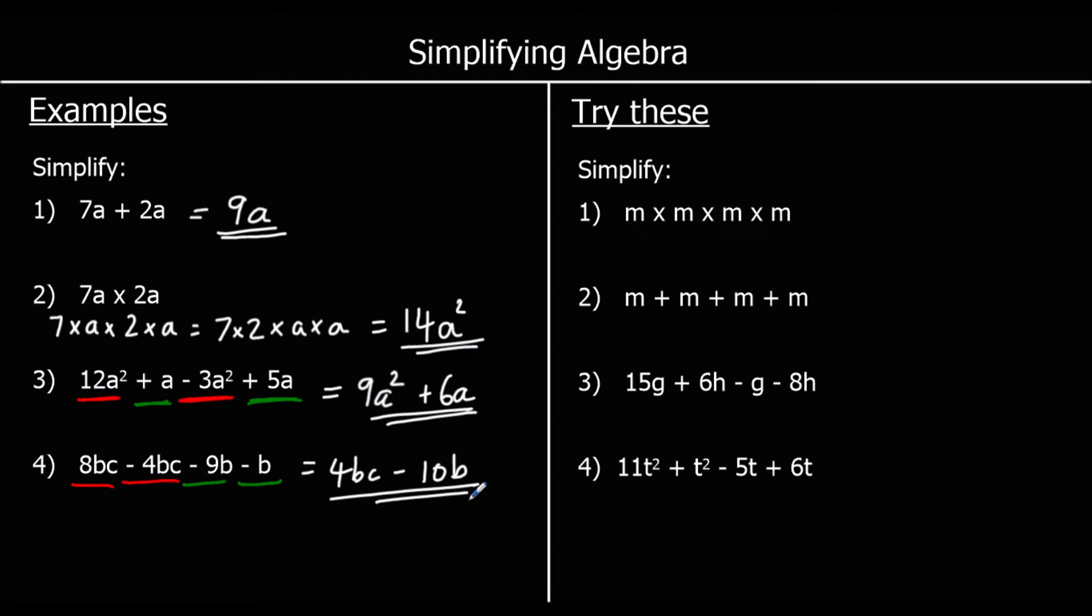Okay, 4 for you to try. So give them a go. Question 1, M times M times M times M. We can write that as M to the power of 4. So if we had 5 times 5, that's 5 squared. 5 times 5 times 5, we call 5 cubed. And 5 times 5 times 5 times 5, we can say is 5 to the power of 4. So in the same way, M times M times M times M is M to the power of 4.